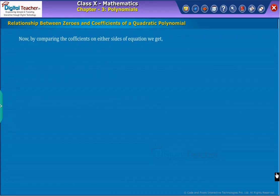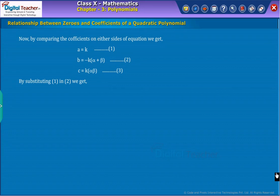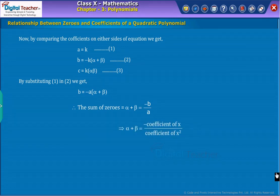By comparing both sides, we get equations 1, 2, and 3 as shown on the screen. By substituting equation 1 in equation 2, we get B. This shows that the sum of zeros, alpha plus beta, is equal to minus B by A, which is further equal to the ratio of the negative coefficient of X to the coefficient of X squared.